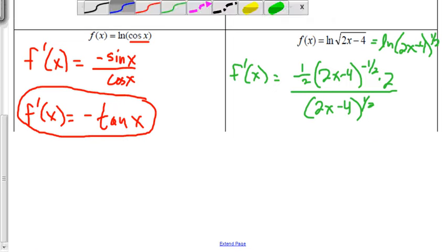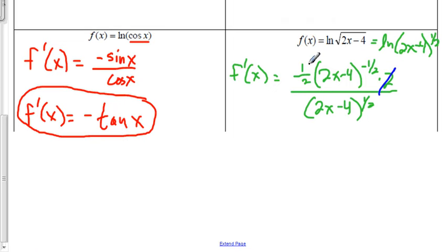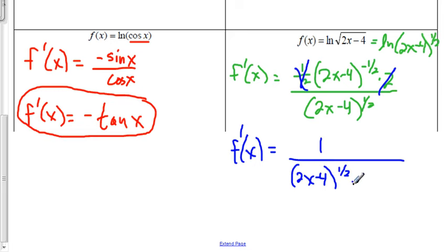Now let's simplify. 2 times 1 half is just 1. Now I have a negative exponent. I'm going to bring that down to the denominator, so my denominator was already there, 2x minus 4 all to the 1 half power, and then 2x minus 4 to the negative 1 half is going to be to the positive 1 half.